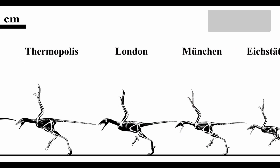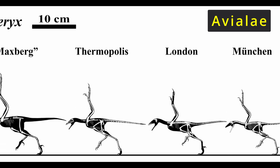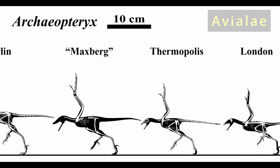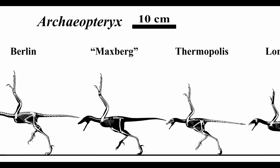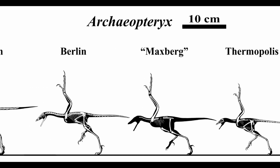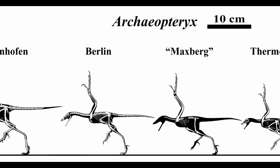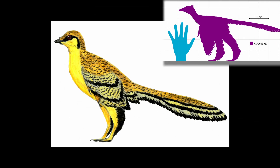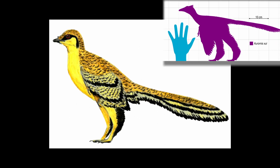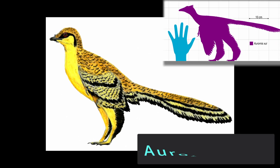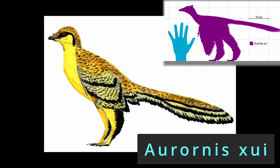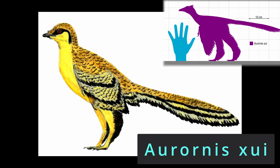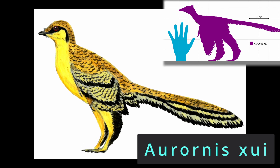Avialy, or bird wings — the clade containing the only living dinosaurs, the birds — got going in the late Jurassic, with Archaeopteryx generally accepted as an early representative. Earlier claims have been made, such as the one predating Archaeopteryx by some 10 million years, the late Jurassic Ornus Shui.